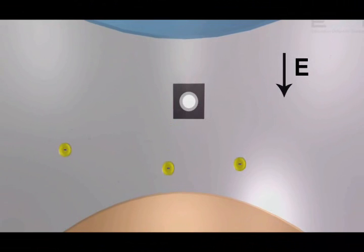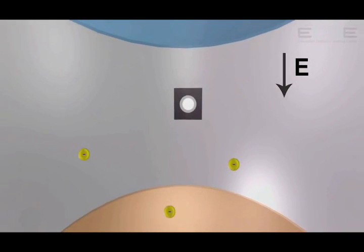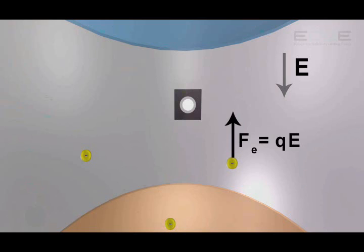Now the electric field is turned on and the electric force on the oil drop is F_e = qE. The net force on the oil drop is again zero.